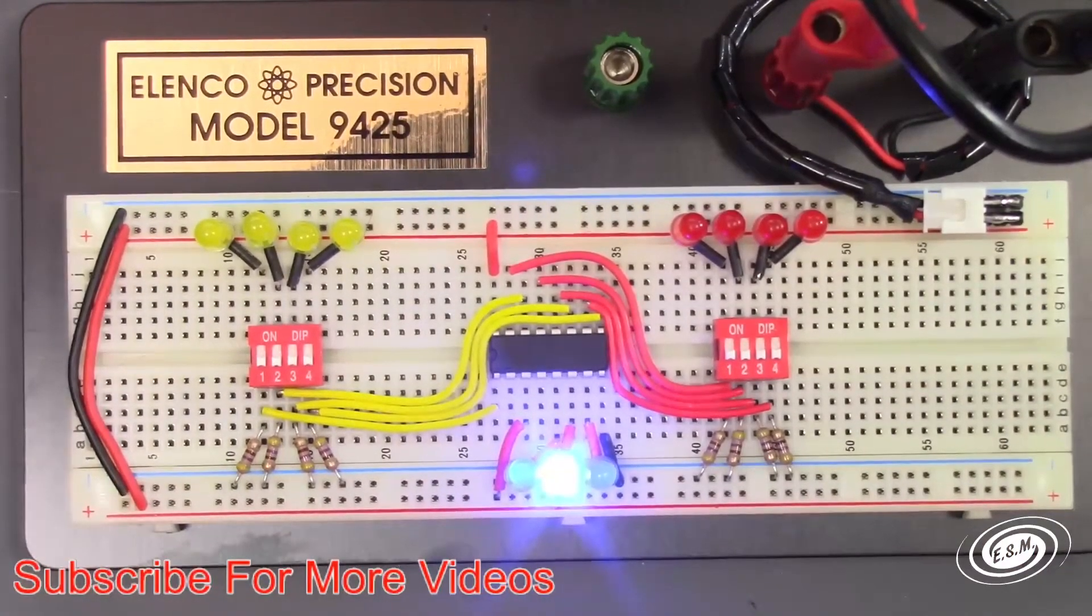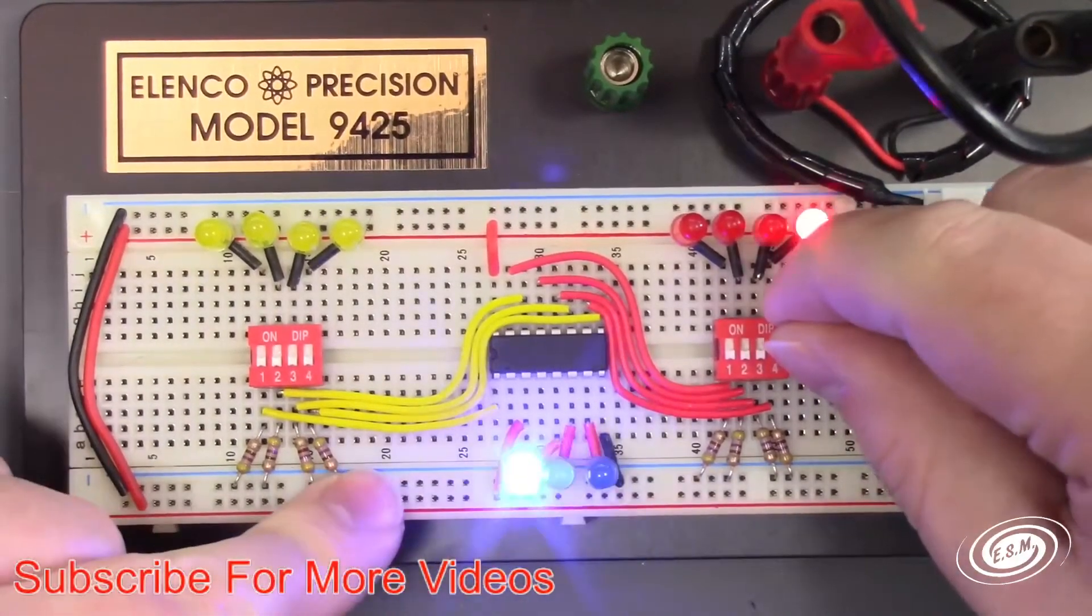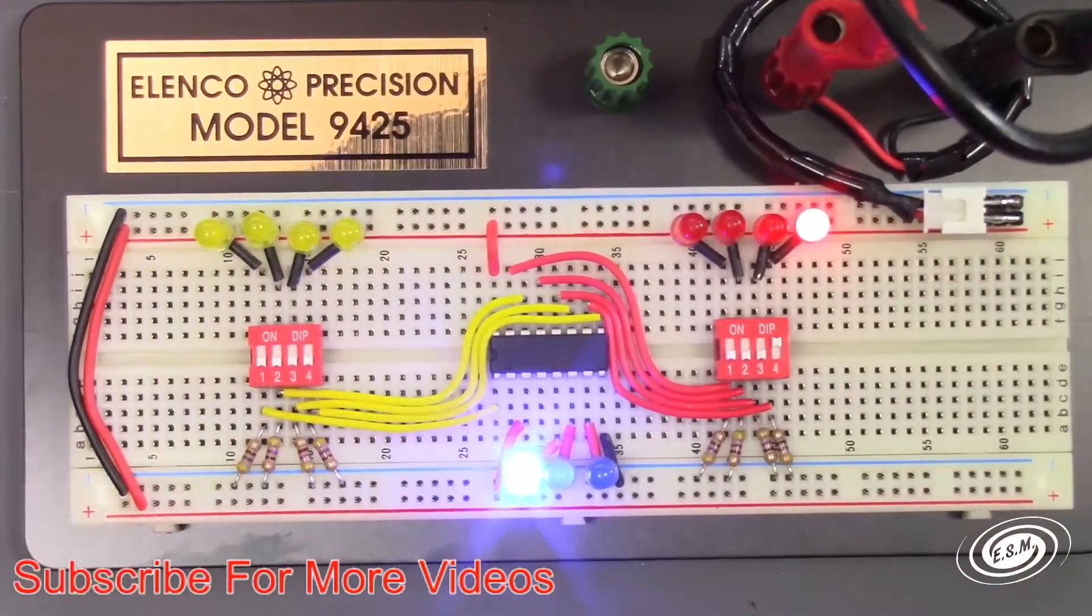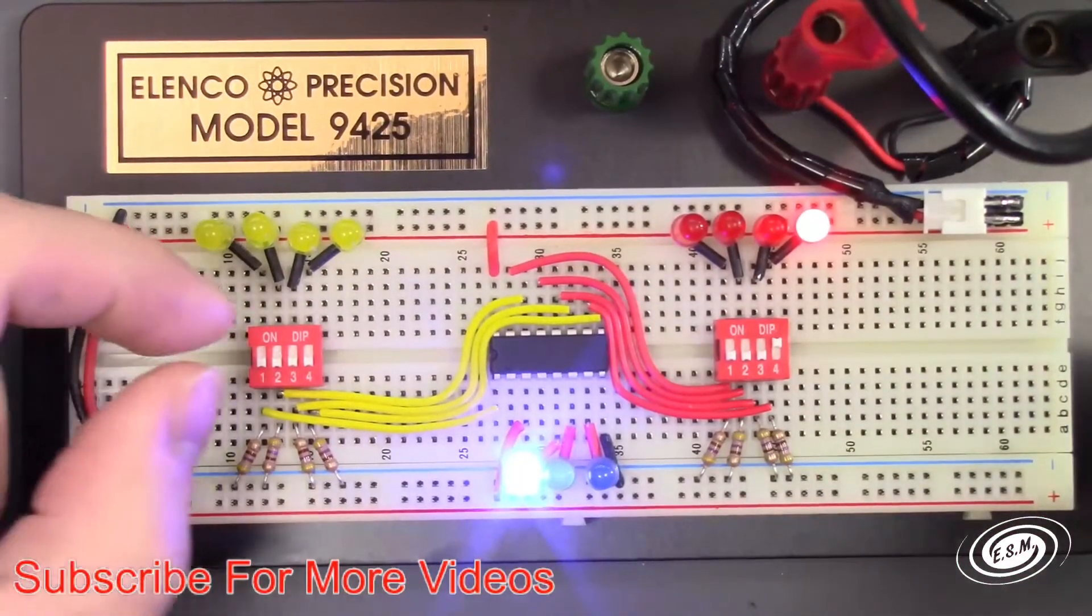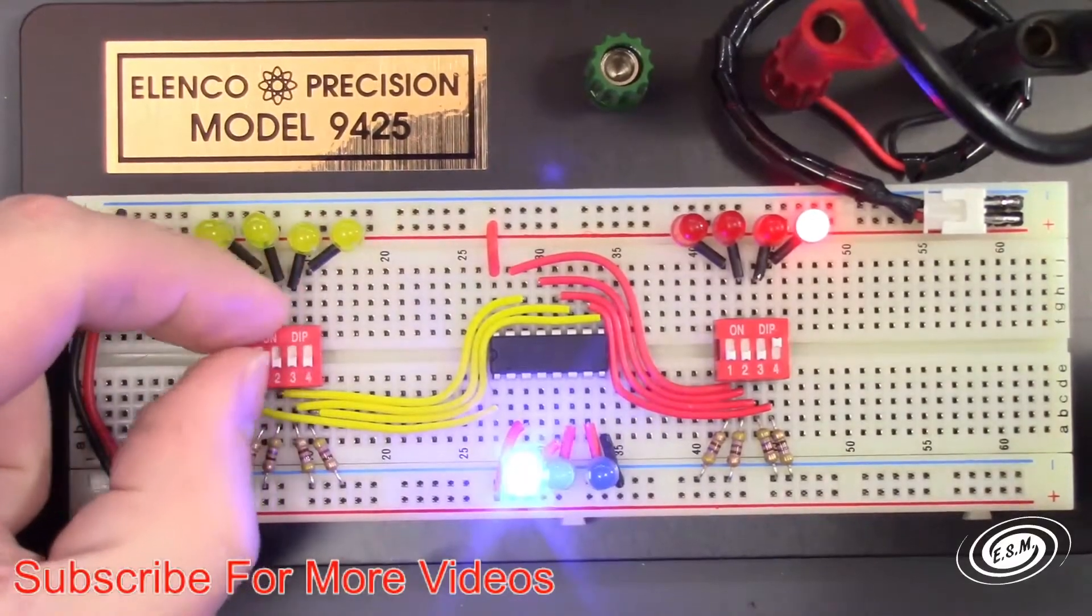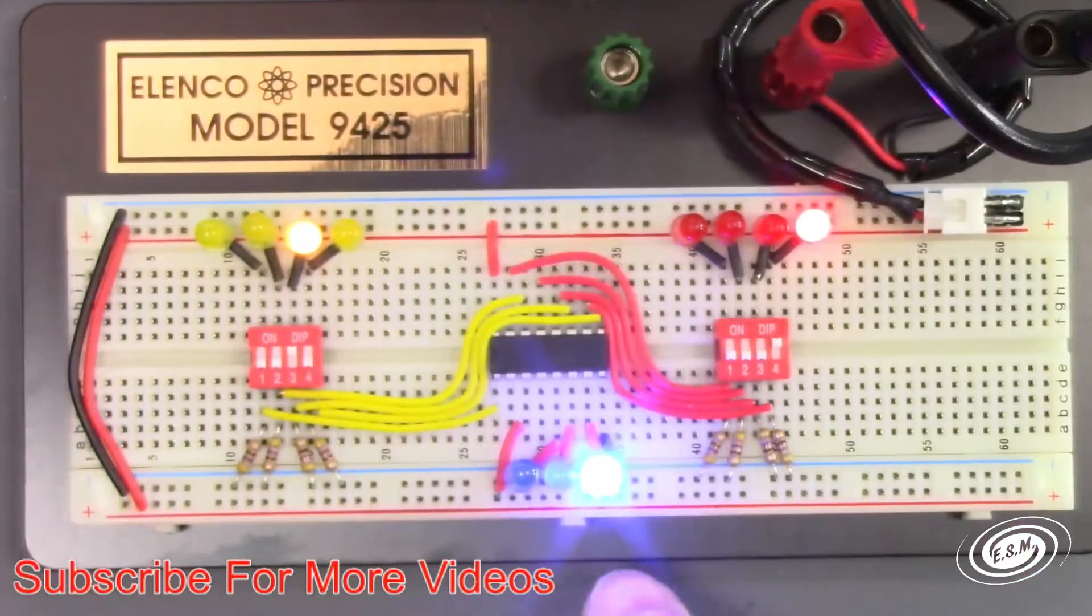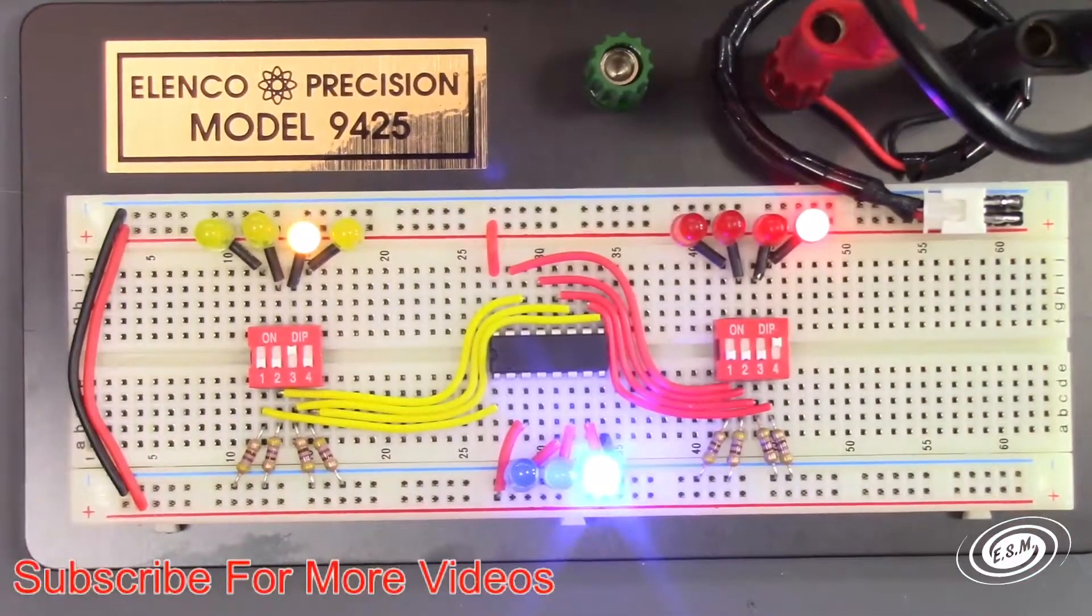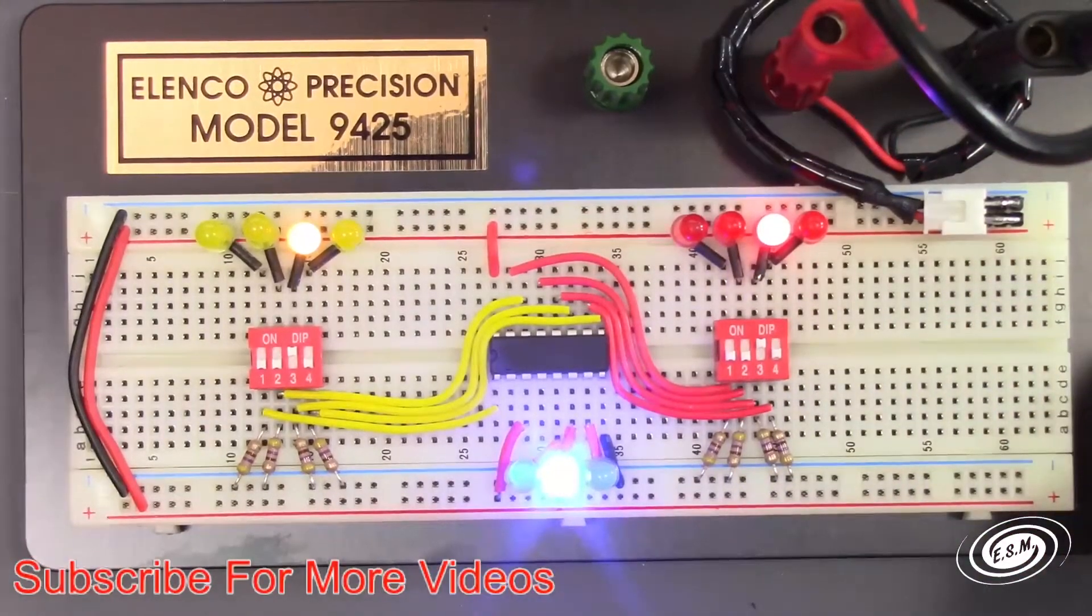So if I make A greater than B by adding one bit here, this light should come on, and it does, because this is now a 1, and that is now A. Now what if I make this a 2? If I make that a 2?